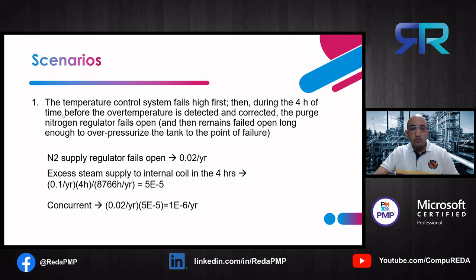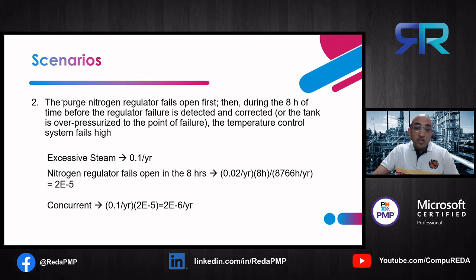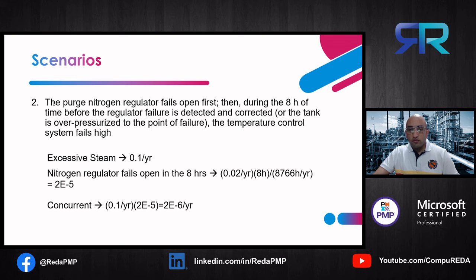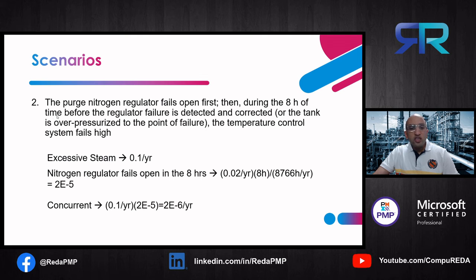In Scenario 2, the purge nitrogen regulator fails open first. Then during the eight hours before the regulator failure is detected and corrected, the temperature control system also fails high. The excessive steam frequency is 0.1 per year. The unavailability of the nitrogen regulator failing open during the eight-hour window is 0.02/year × (8 hours / 8,766 hours/year) = 2×10⁻⁵. The frequency of this scenario is 0.1/year × 2×10⁻⁵ = 2×10⁻⁶ per year.